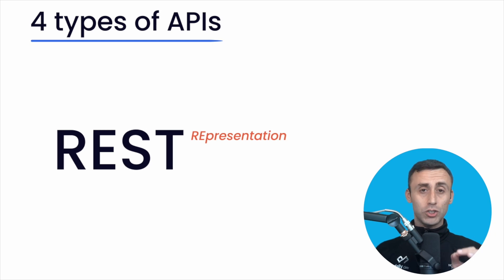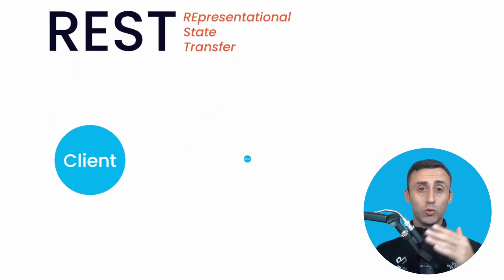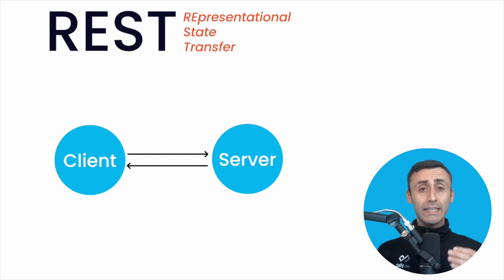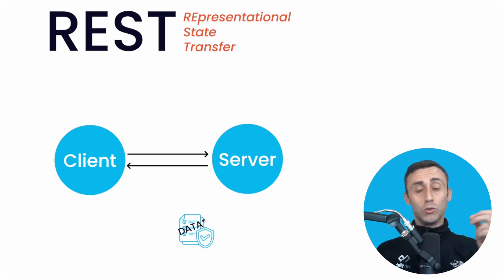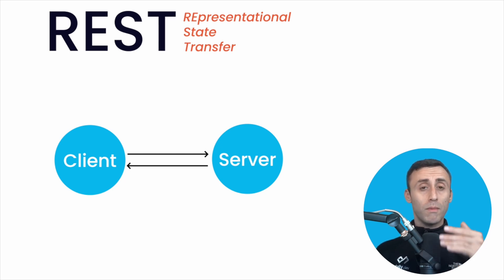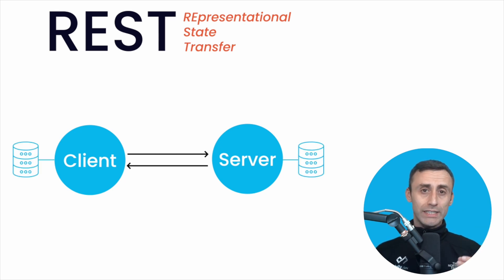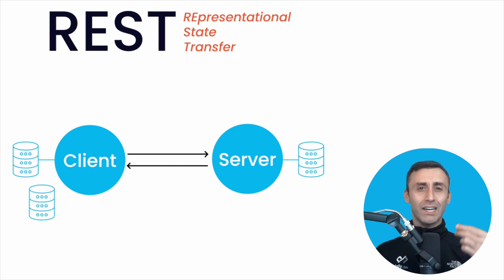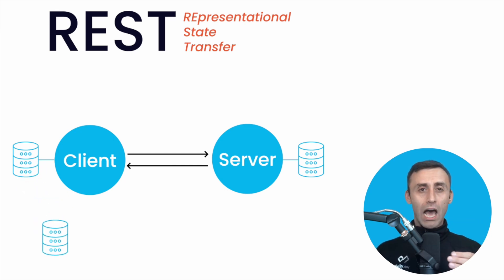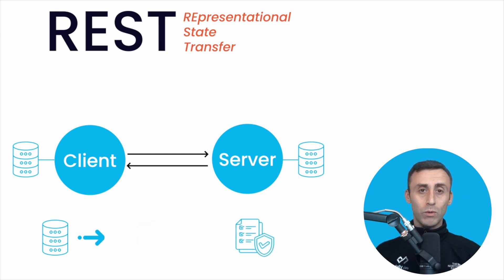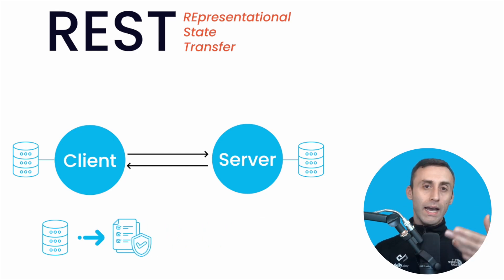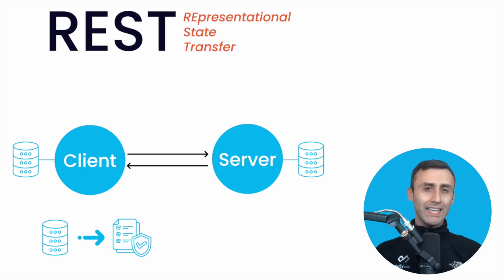REST stands for Representational State Transfer. This architecture helps the client to exchange information with the server using data. The client sends some data in the request, and the server processes it and then responds with some other data to the client. There is a state associated with each application and its data — you can think of it as a carbon copy of the application data at a given timestamp. This state is represented in a given format, defined in the architecture itself, and then transferred between the two applications. And this is what REST APIs do.